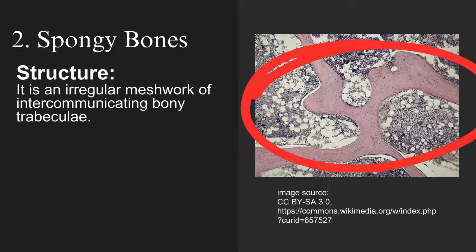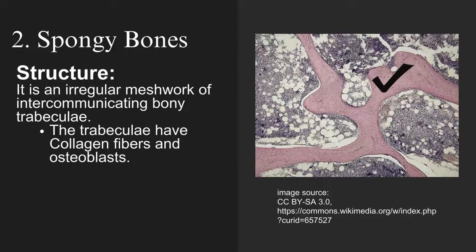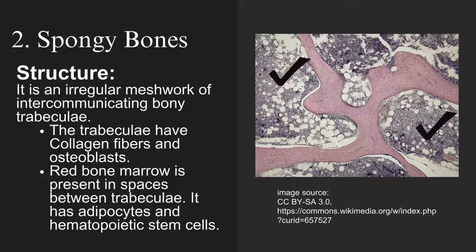The trabeculae have collagen fibers and osteoblasts. Red bone marrow is present in spaces between trabeculae. It has adipocytes and hematopoietic stem cells.